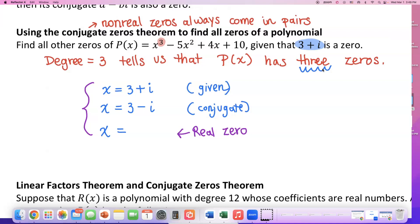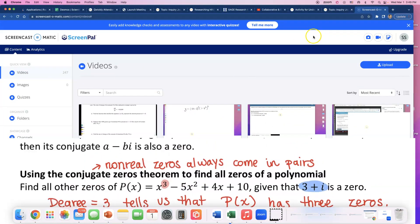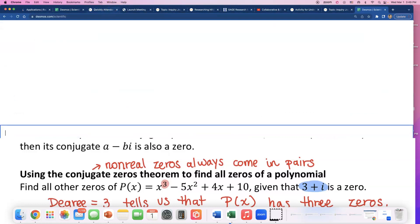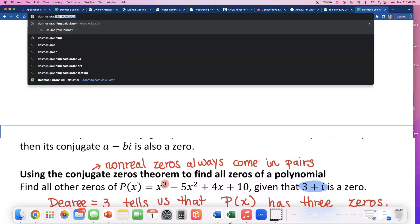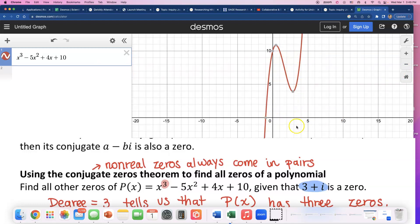So if it's real, where can we find it? I'm gonna graph this. Because if it's a real zero, we should be able to see it. Desmos graphing. If it's a real zero, we should be able to find it right on that x-axis. x³ minus 5x² plus 4x plus 10. Look at this function. It's a cubic function. It only has one x-intercept at negative one. And x-intercepts are aka zeros. So we found the third answer.